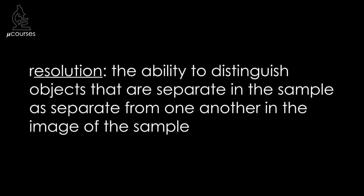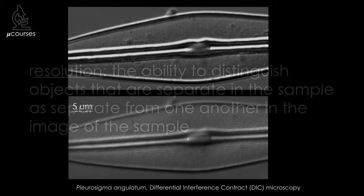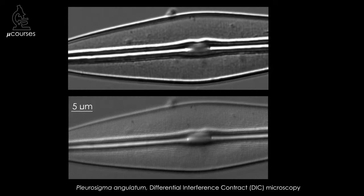We're going to focus our discussion of the point spread function on resolution. The formal definition of resolution is the ability to distinguish objects that are separate from one another in reality in the sample as separate from one another in the image of the sample generated by the microscope. These are DIC images of nature's perfect test specimen: diatoms. Diatoms have pores in their silica shells that are very regularly spaced, and in some species the spacing between the pores is right at the resolution limit of the microscope.